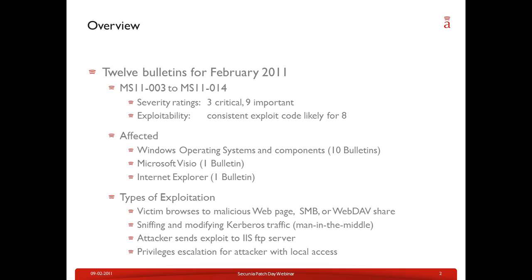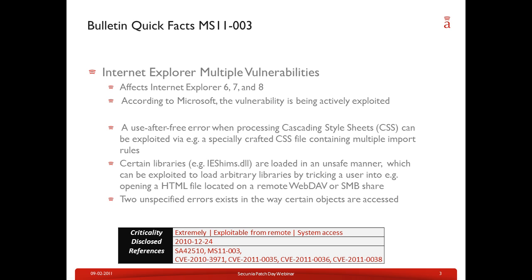Many vulnerabilities are of the privilege escalation type. They are exploitable by an attacker who already has local access but can then escalate their access rights to a system account or administrative account. We now look at the three bulletins considered most important in more detail.